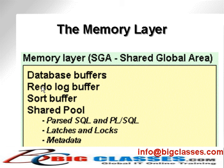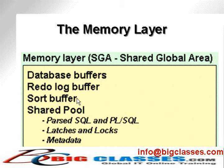The redo log buffer contains a record of changes to the database buffers and the database files. After a period of time, or when other parameters such as the amount of information changed are met, the redo log buffer will be written to a redo log file on the disk. Redo log files can also be written to archive logs, which is a history of redo log files. The sort buffer is an area of memory reserved for sorting in memory.